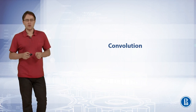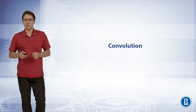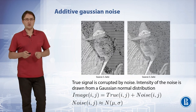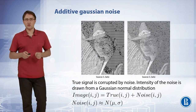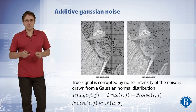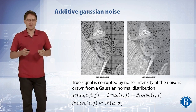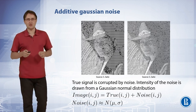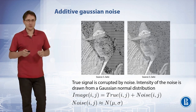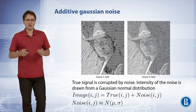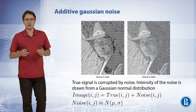Image convolution is probably the most important operation in image processing. I'll start the talk about convolution from image noise. There are several types of image noise, but I will consider only one of them – additive Gaussian noise. In this case noise is added to the true signal. Intensity of the noise is drawn from a Gaussian normal distribution. Each pixel is corrupted randomly and independently from all other pixels.